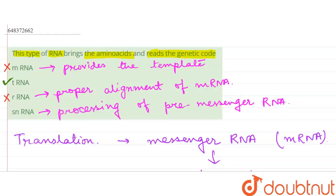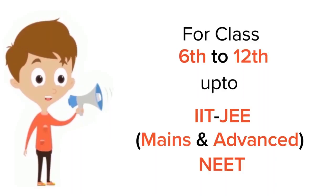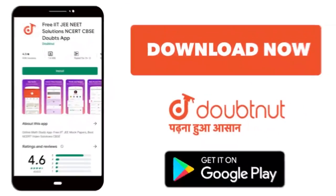So this is also incorrect. The correct option is the tRNA. Thank you. For class section 12th, IIT JEE and NEET level, trusted by more than 5 crore students, download Doubtnet app today.